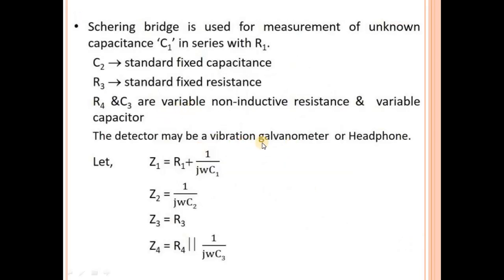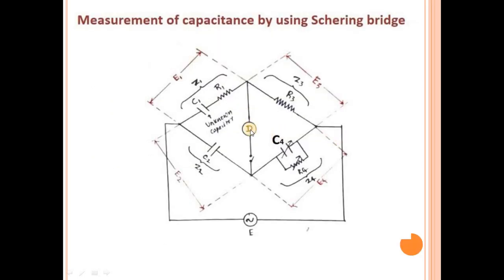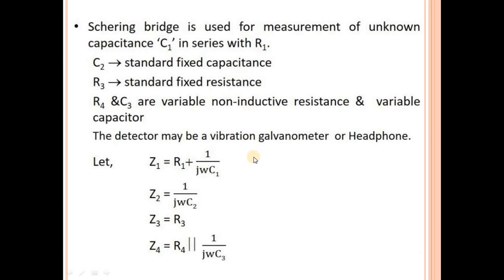The detector may be a vibration galvanometer or headphone. The Z1 formula is R1 + 1/(j·ω·C1) because resistance and capacitance are connected in series. Z2 formula is 1/(j·ω·C2). Z3 is pure resistance R3. Z4 formula is R4 in parallel with 1/(j·ω·C3).